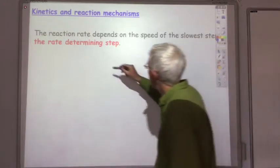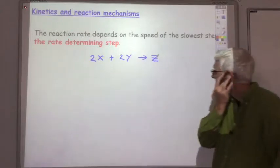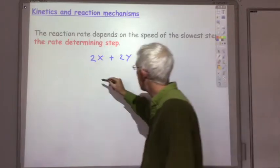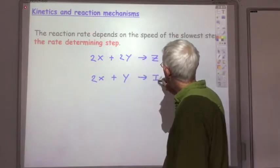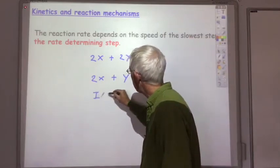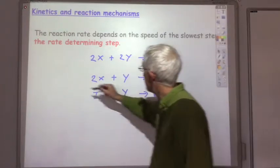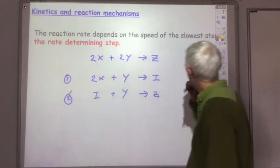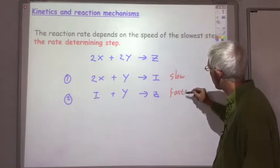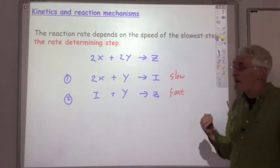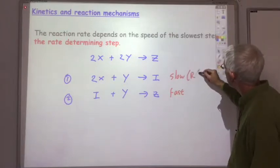Let's take an example where two molecules of X react with two molecules of Y to produce Z. Possibly in the first step, two molecules of X react with one molecule of Y to produce an intermediate. In the second step, the intermediate reacts with the second molecule of Y to produce Z. So there are two steps in this mechanism. Let's say the first step is the slow step and the second is the faster step — the rate of reaction will depend on the slow step, which is called the rate determining step.